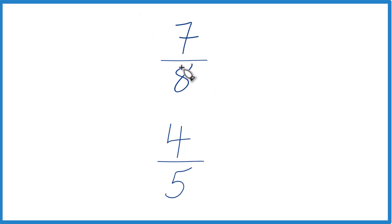So you could just put 7 divided by 8 in a calculator, get a decimal, 4 divided by 5, get a decimal, and compare those decimals. That would tell you whether 7 eighths is greater than or less than 4 fifths.